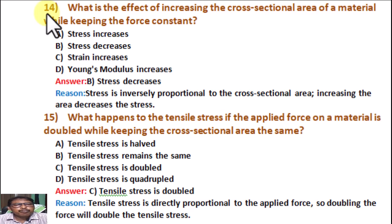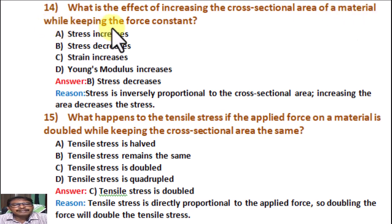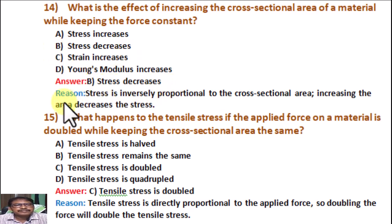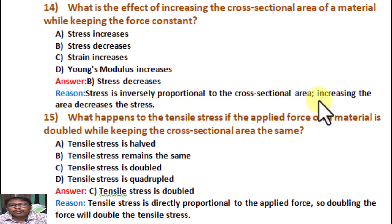Question number 14. What is the effect of increasing the cross-sectional area of a material while keeping the force constant? A: Stress increases. B: Stress decreases. C: Strain increases. D: Young's modulus increases. Correct answer B: Stress decreases. Reason: Stress is inversely proportional to the cross-sectional area, so increasing the area decreases the stress.